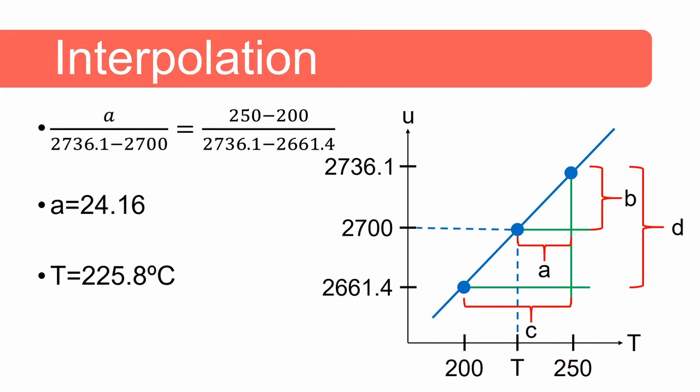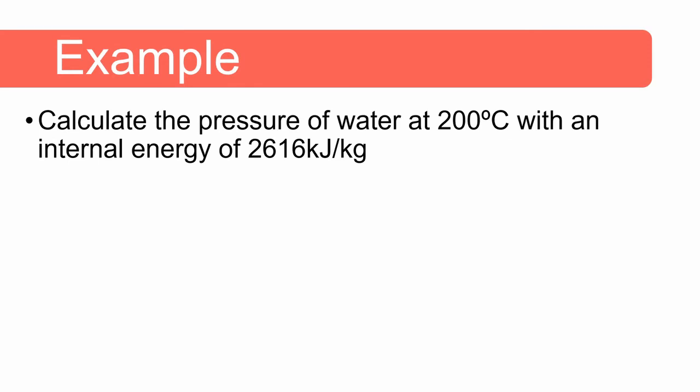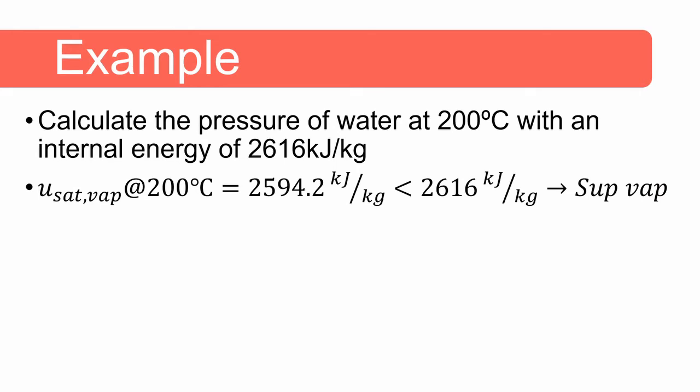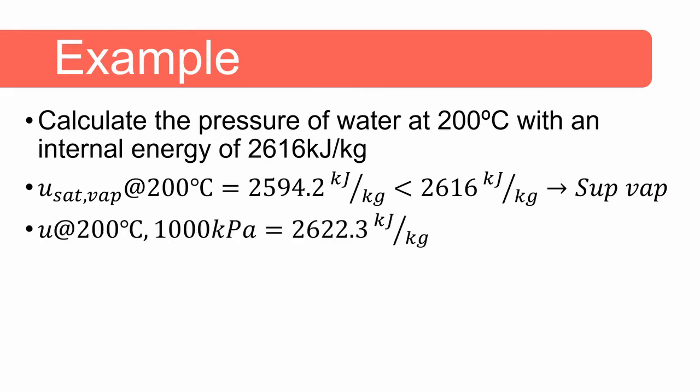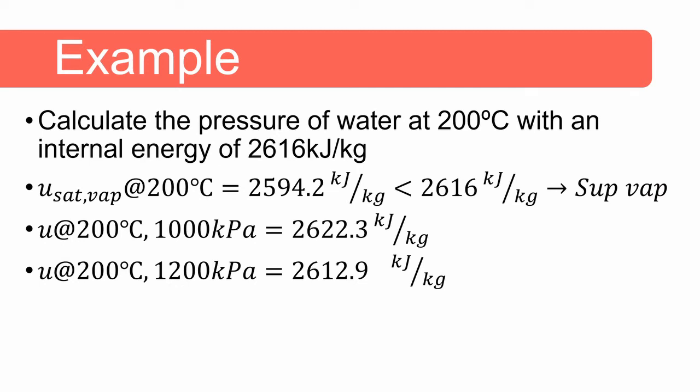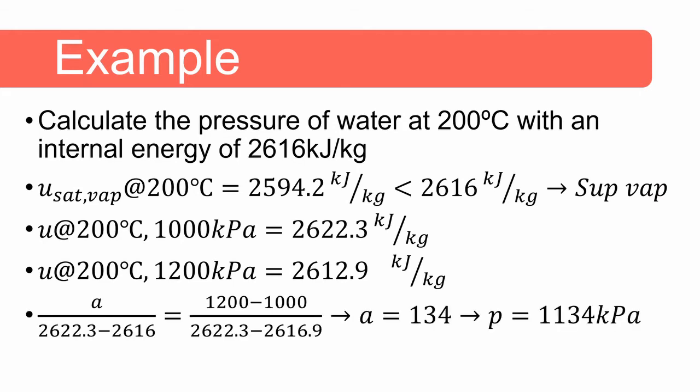Now let's look at an example where pressure is the unknown. Calculate the pressure of water at 200 degrees Celsius with an internal energy of 2616 kilojoules per kilogram. The saturated internal energy of water at 200 degrees Celsius is 2594.2 kilojoules per kilogram, which is less than the given 2616, so the water is a superheated vapor. At 1000 kilopascal, the internal energy at 200 degrees Celsius is 2622.3, and at 1200 kilopascal it is 2612.9 kilojoules per kilogram. Interpolating, we get a pressure of 1134 kilopascal.